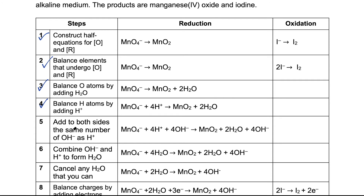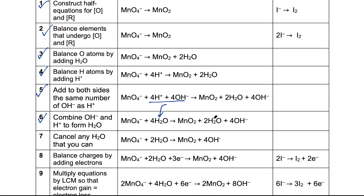Now here is the additional step for alkaline conditions: we have to add the same number of OH⁻ as we have added for H⁺. Since I added 4 H⁺, I must add 4 OH⁻, and this must be added on both sides. We then combine any H⁺ and OH⁻ to form water, and cancel anything in common on the left and right. We had 4 water and 2 water, and after cancelling we are left with 2.